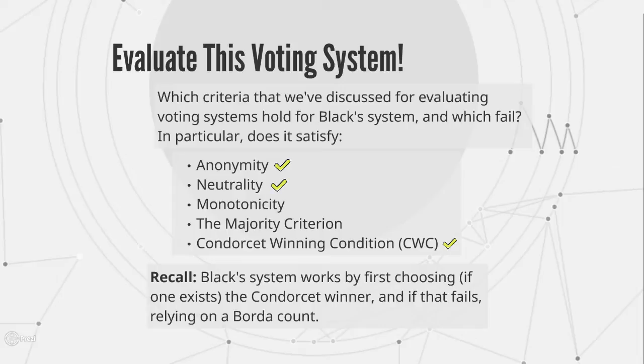Similarly, if two candidates are swapped on ballots and one was a Condorcet winner and the other wasn't, swapping their positions on every voter's ballot would swap the non-Condorcet winner to the Condorcet winner. And in the Borda count, swapping two candidates' positions on every ballot would exactly swap their Borda point count. This system is going to satisfy the majority criterion, because if a candidate wins a majority of votes they will have to be declared the Condorcet winner. So we don't have to worry about the fact that the Borda count doesn't satisfy the majority criterion, because it will satisfy the Condorcet winning criterion and force a win. Similarly, because both the Condorcet winning condition and the Borda count satisfy monotonicity, this system has to satisfy being monotone as well.